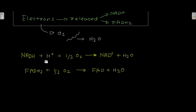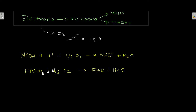NADH + H⁺ + ½O₂ gives NAD⁺ + H₂O. The NADH gave its electrons to H⁺ and ½O₂, resulting in the formation of H₂O and NAD⁺. Similarly, FADH₂ + ½O₂ gives FAD + H₂O.